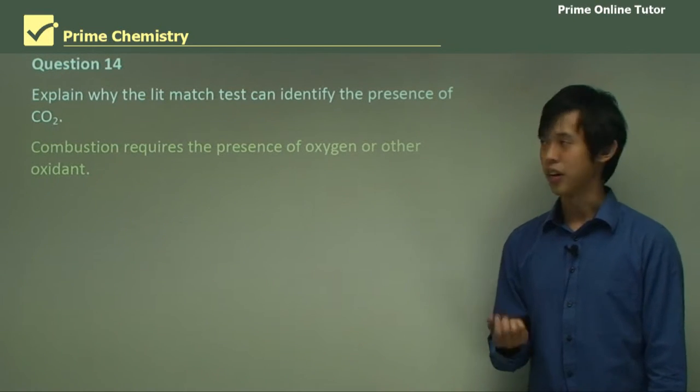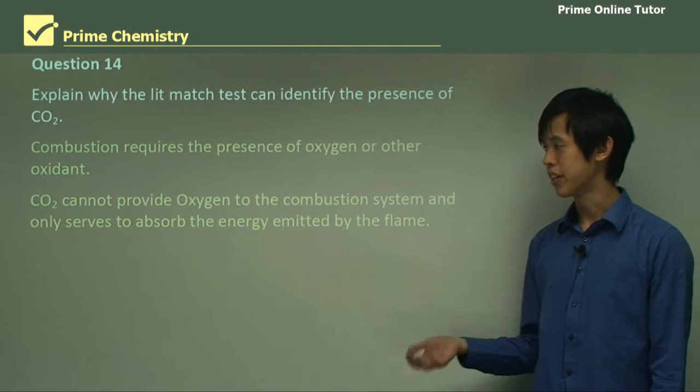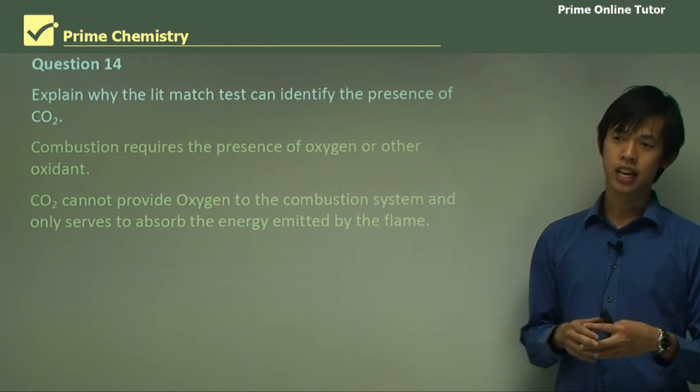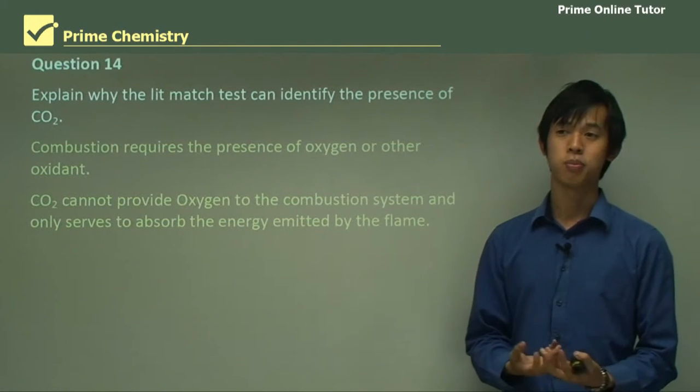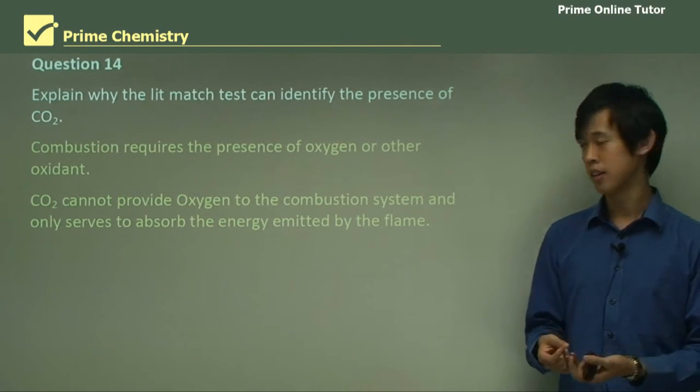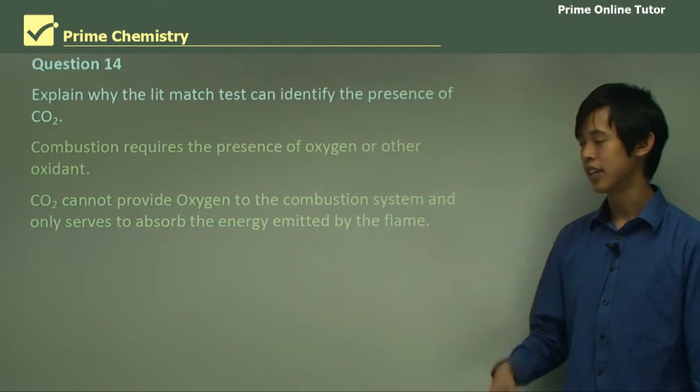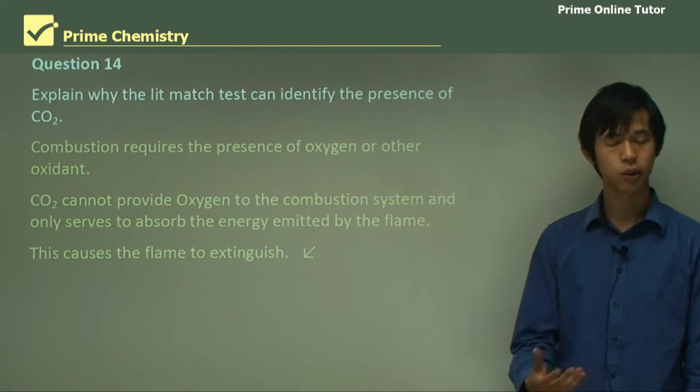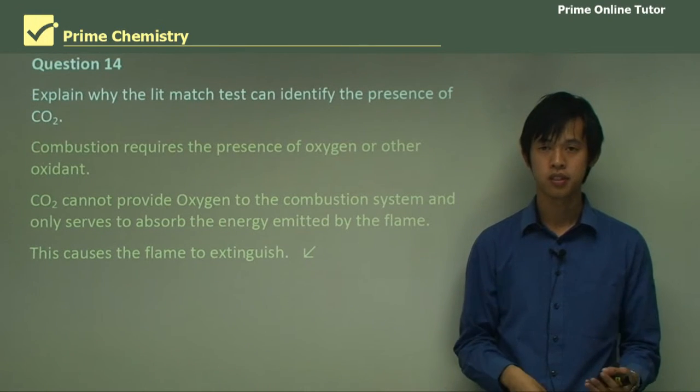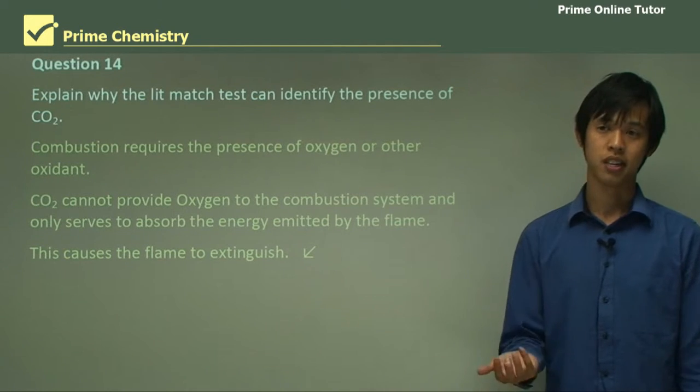Well combustion requires the presence of oxygen or another oxidant, right? It needs to have some kind of oxidant to allow the flame to burn. Now CO2 cannot provide oxygen to the combustion system, and it only serves to absorb the energy emitted by the flame. So the flame is actually emitting energy, and what happens is that energy would usually go into breaking up oxygen molecules. But all the CO2 is doing is just sucking up that energy and not leaving it to break up more, and doesn't even break up. So you're not getting any new reactants, so it's just absorbing energy from the reactions, and you're losing reactants, so it just quenches the flame essentially. And that causes the flame to extinguish. Because it's absorbing all the energy, the flame is emitting, and not breaking up into oxygen molecules, then you can't have any more flame, because all the energy is gone. So that's why carbon dioxide puts out fire.